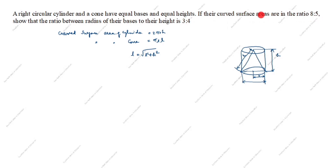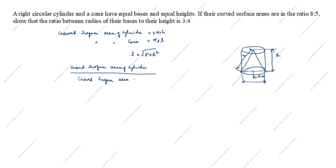What is given — if the curved surface areas are in the ratio 8 is to 5 — so curved surface area of cylinder divided by curved surface area of cone equals 8 by 5. So: 2πrh divided by πrl, substituting l as root of r squared plus h squared, gives 2πrh divided by πr root of r squared plus h squared, equal to 8 by 5.